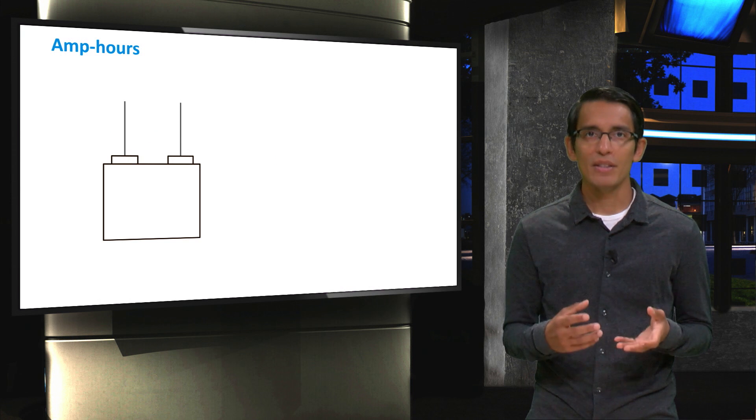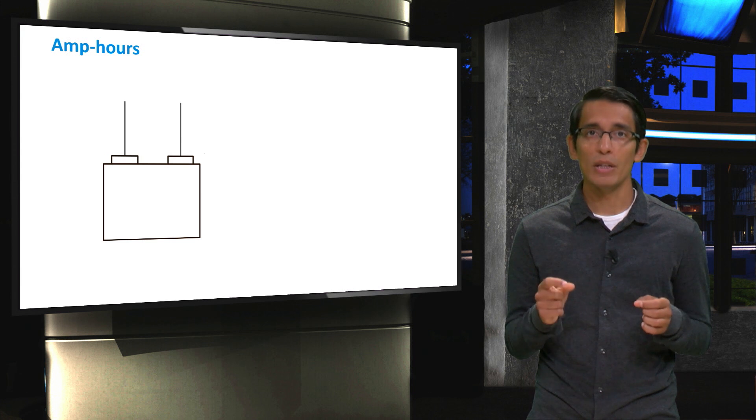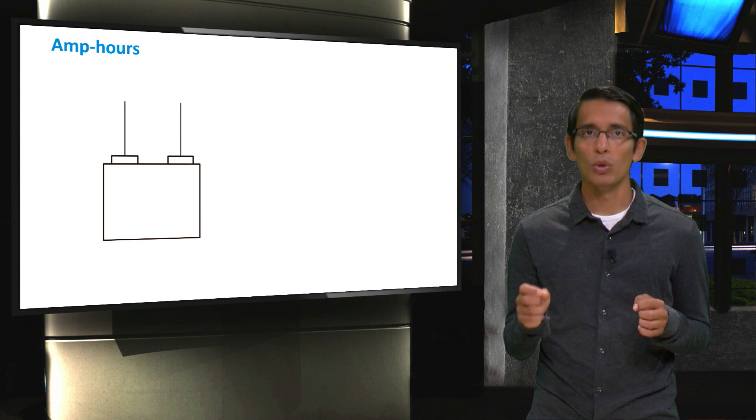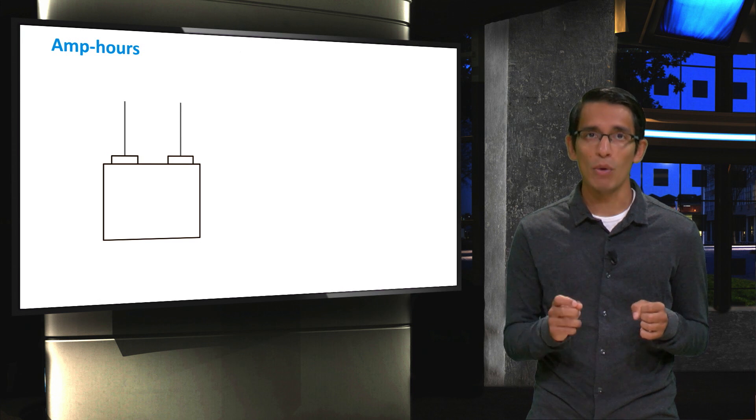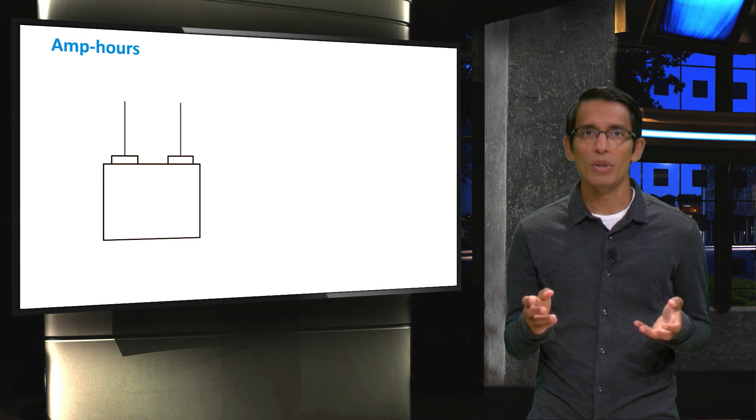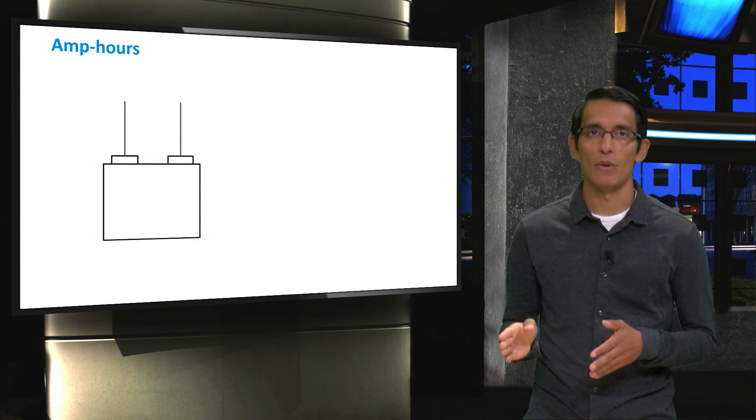When talking about battery capacity, we saw that it is measured in amp hours or milliamp hours. Although charge is measured in coulombs, amp hour is just another unit of charge. Since 1 coulomb is equal to 1 amp second, 3600 coulombs is equal to 1 amp hour. For batteries, an amp hour is a more convenient unit because in the field of electricity, the amount of energy is usually measured in watt hours.